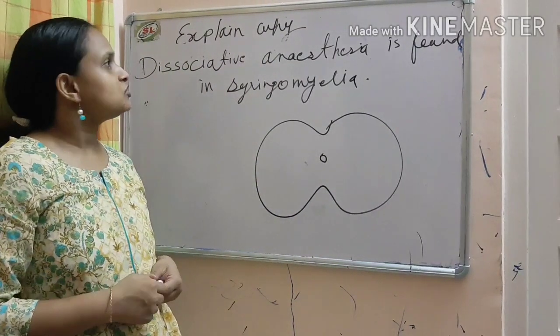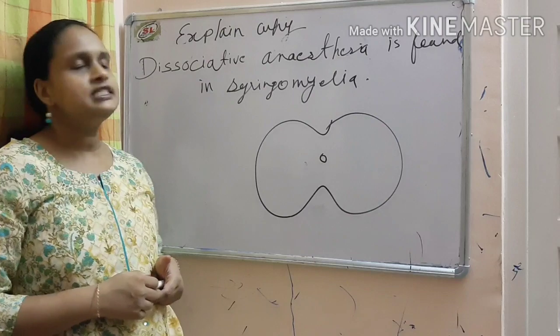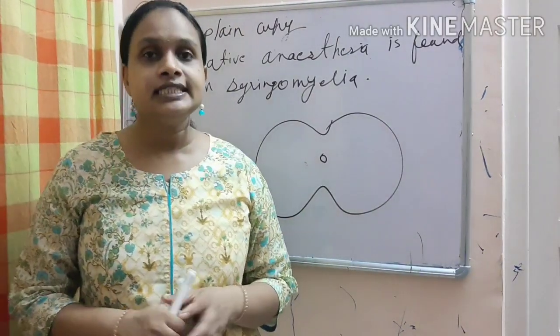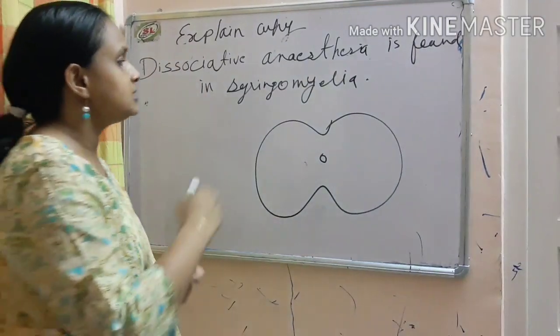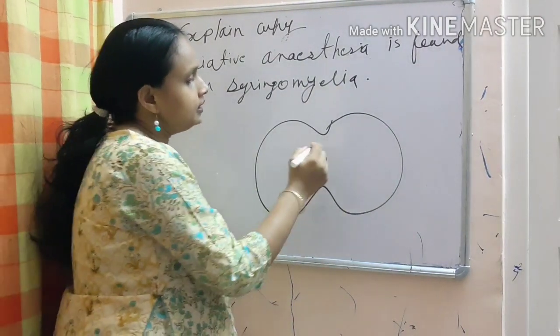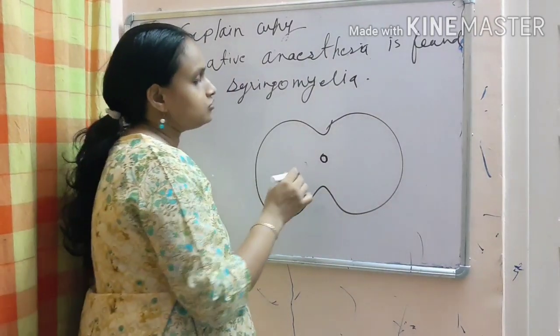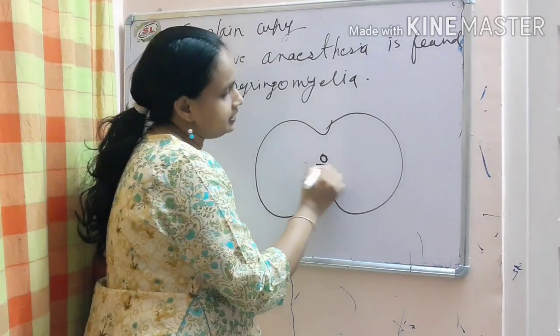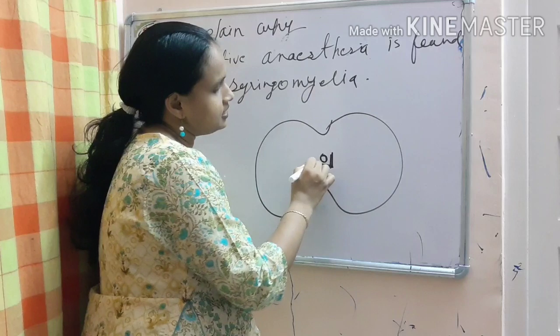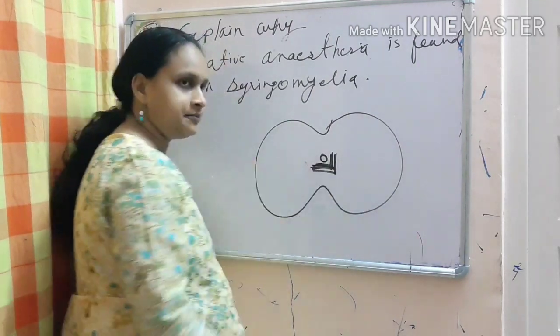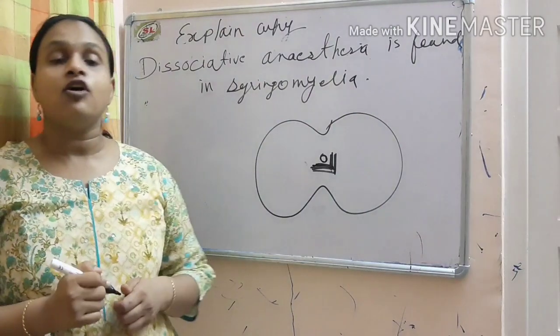Next question is, explain why dissociative anesthesia is found in syringomyelia. What is syringomyelia? In syringomyelia, what happens in spinal cord, this is central canal and due to gliosis and cavity formation, the anterior fibers and lateral fibers can gradually destroy.